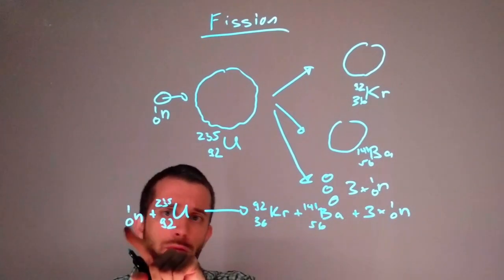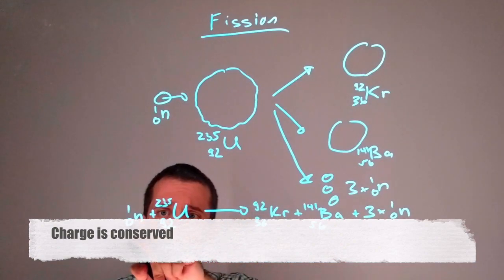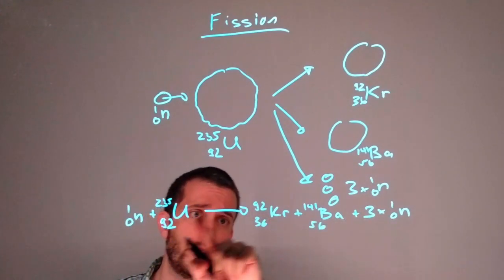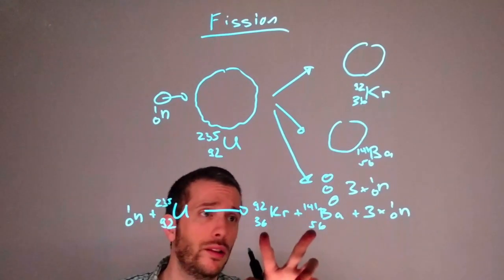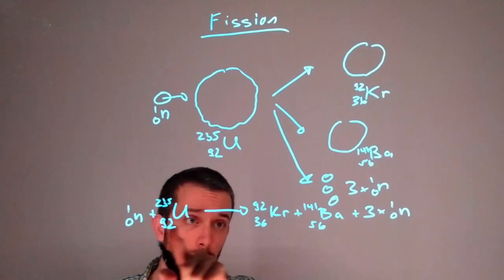Same happens for the total charge or the atomic number. So 0 protons here, 92 protons here, 36 here, 56 here. Everything here together should be equal to everything here together.